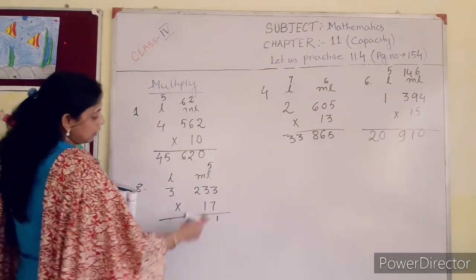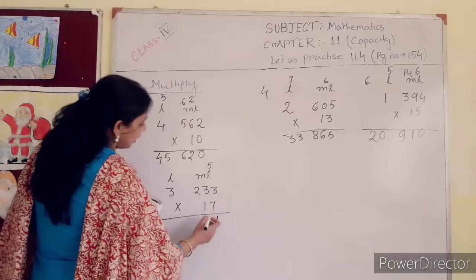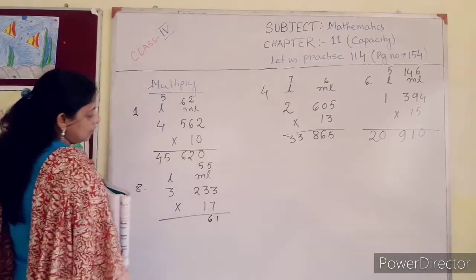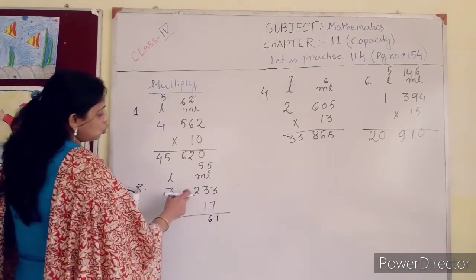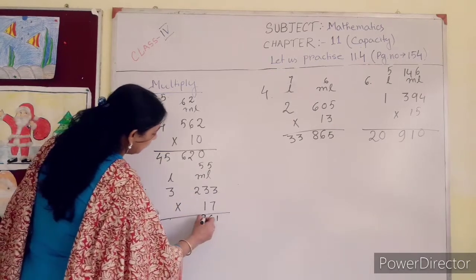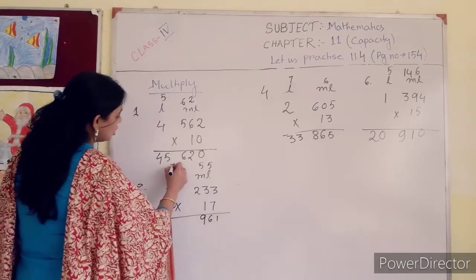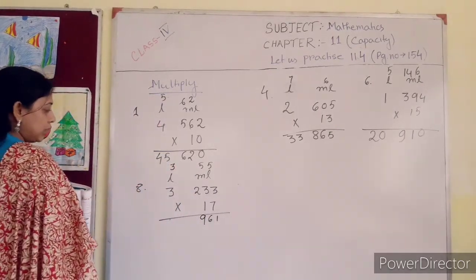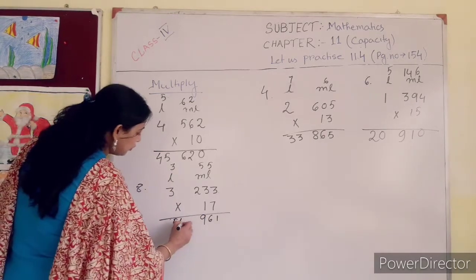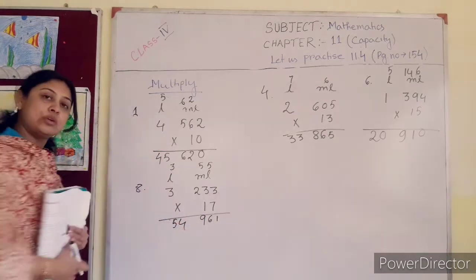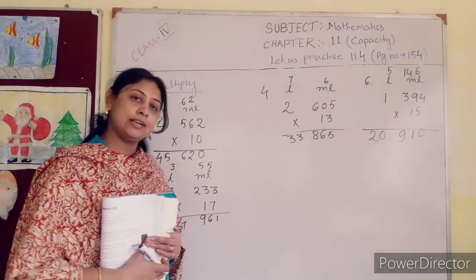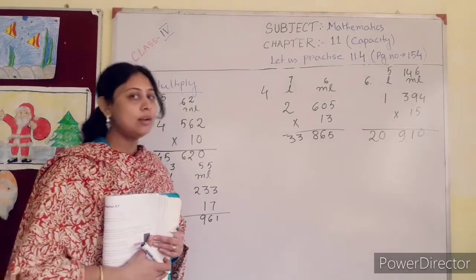Again, 7 into 3 is 51. 51 plus 5 is 56. 5 is in your hand. 7 into 2 is 34. 34 plus 5 is 39. 3 is in your hand. 7 into 3 is 51 plus 3 is 54. So your answer will be 54 liter, 961 milliliter.